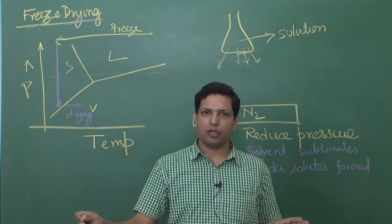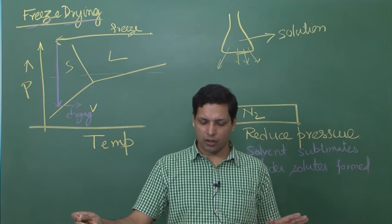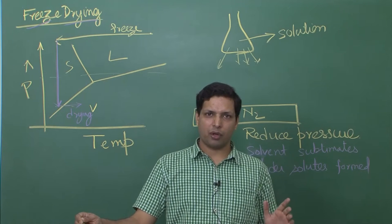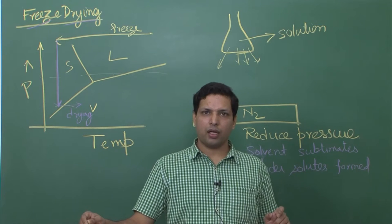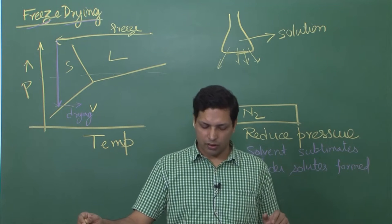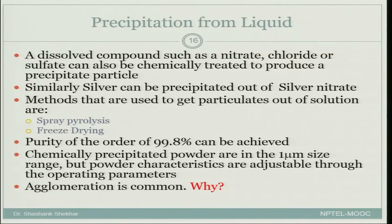You are able to get one of the smallest powder sizes here, although not very high purity like you get in the electrolysis method, but you are able to get very small powder size — that is one good thing about it. Agglomeration is common in such precipitates, and the reason is that agglomeration is inversely proportional to diameter. If the diameter is smaller, agglomeration would be larger.